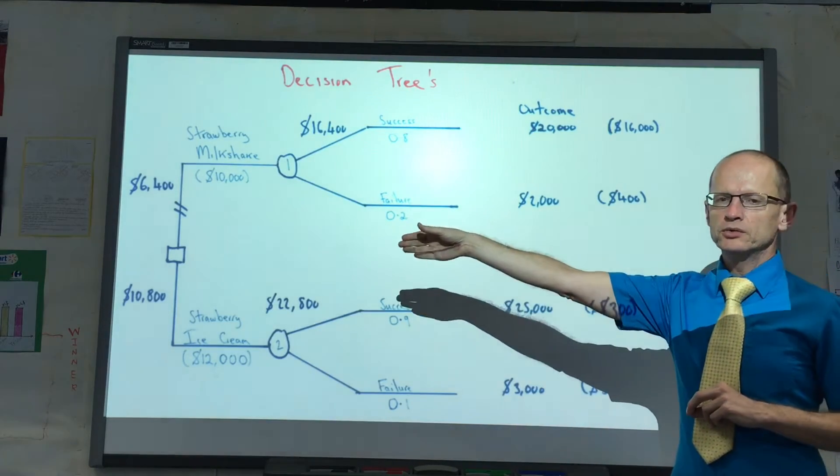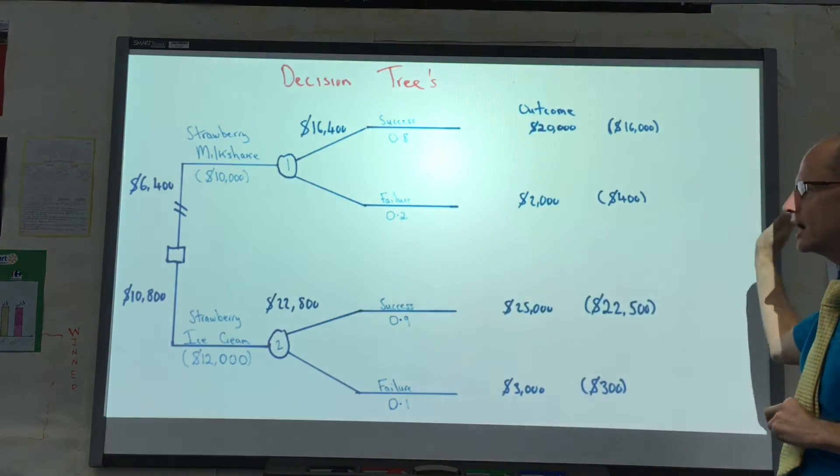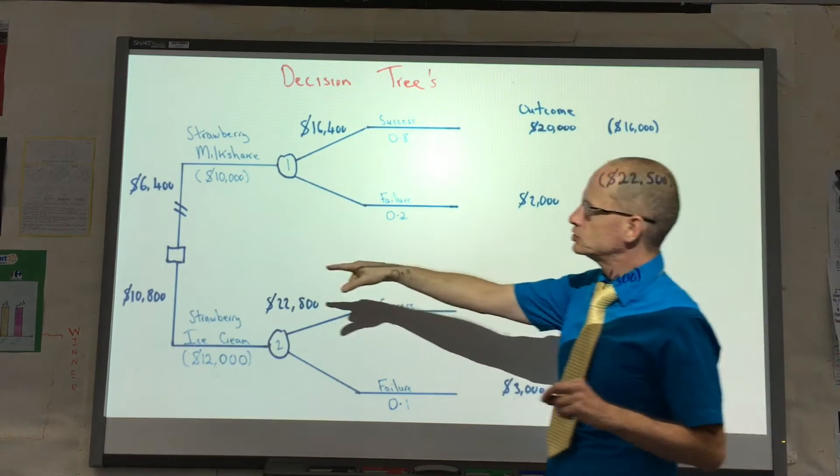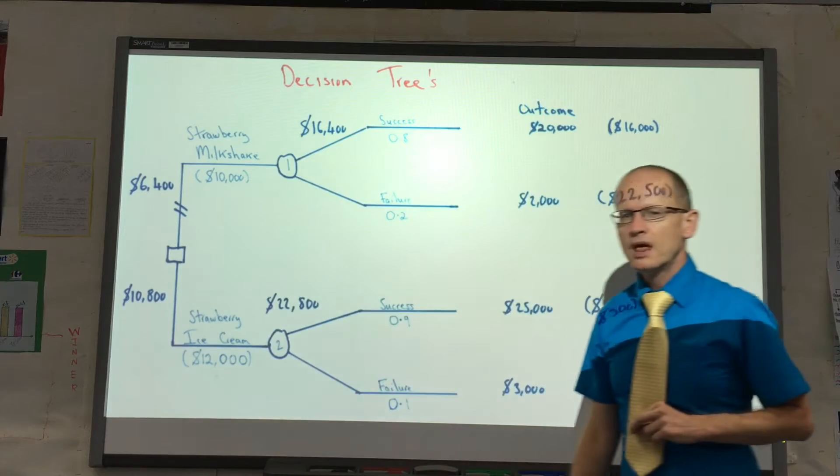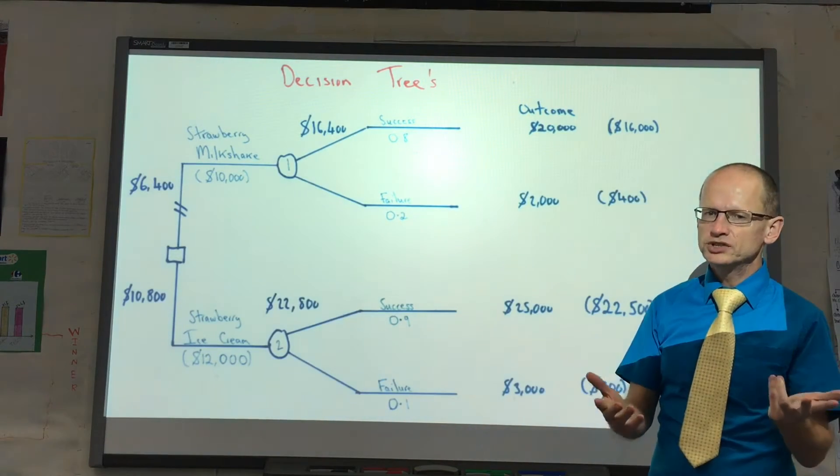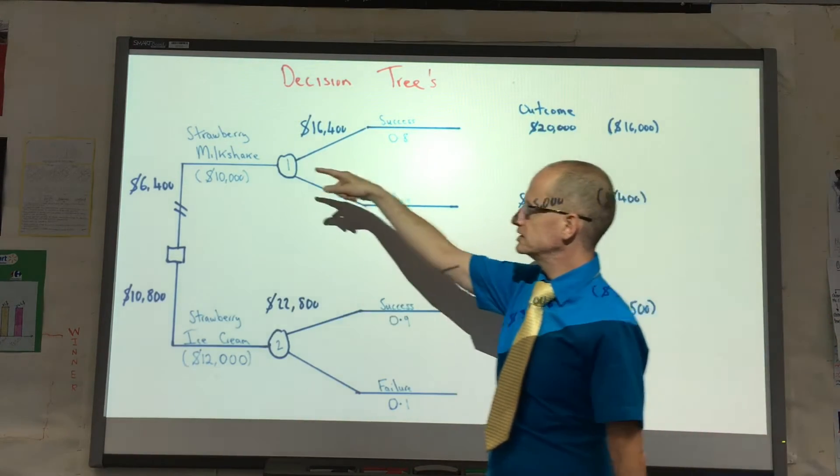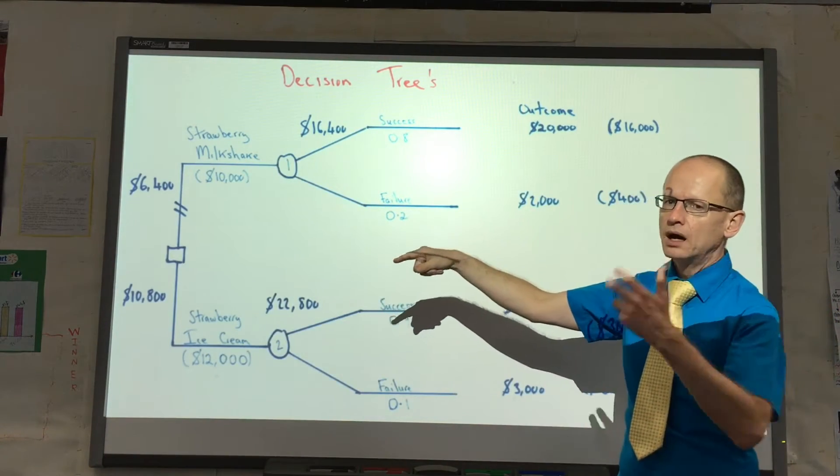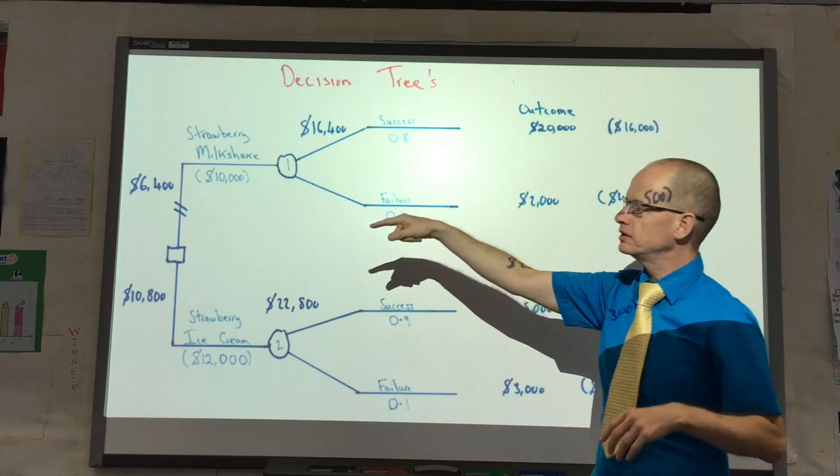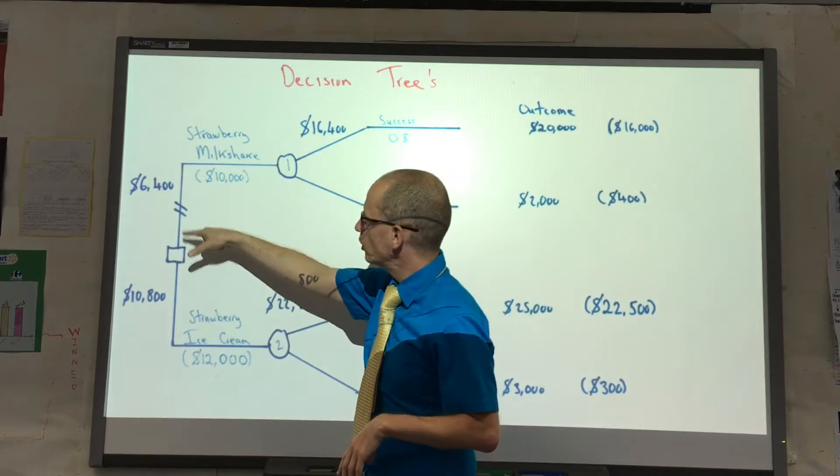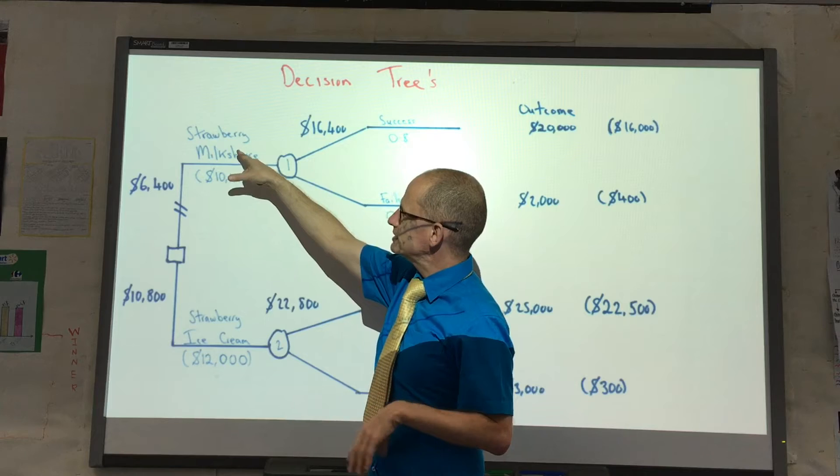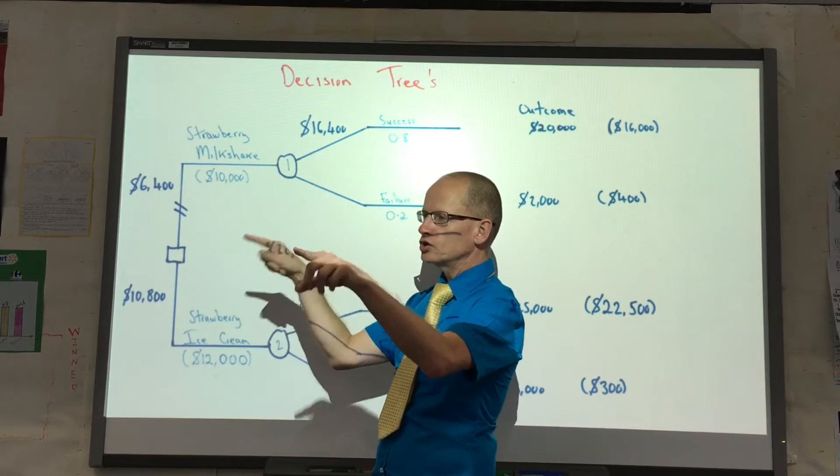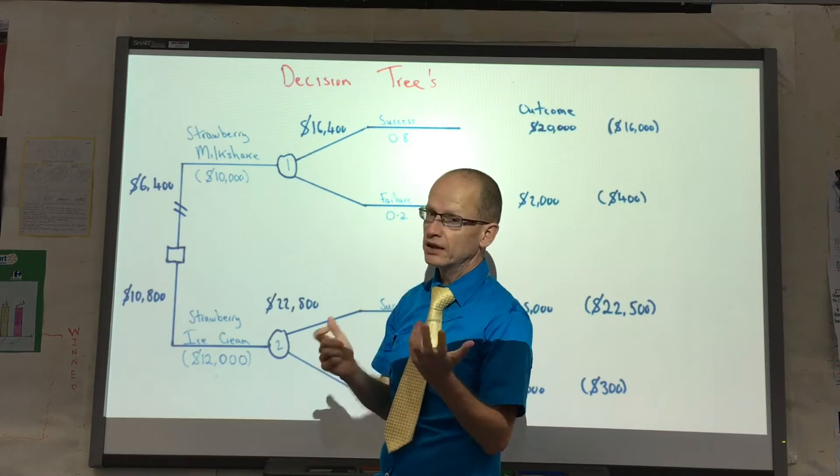Initially we're going to read from left to right and then from right to left. The square which we see here represents the decision which needs to be made, for example between the strawberry milkshake and the strawberry ice cream. Now reading to the right with the strawberry milkshake, this represents the cost. So the cost in brackets I've shown to be $10,000.